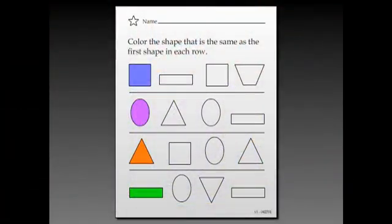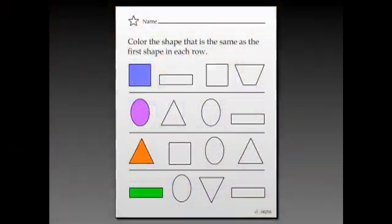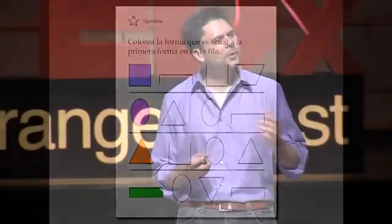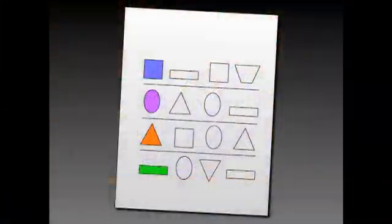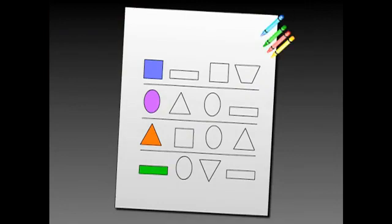And so, when I started investigating how we might be able to teach without words, I was shocked at how language-heavy even preschool materials are. Look at this worksheet I ran across: "Color the shape that is the same as the first shape in each row." They even have it in Spanish. So I wondered, what would happen if we remove all those words and hand this over to some four-year-olds, along with some crayons, and don't say anything?